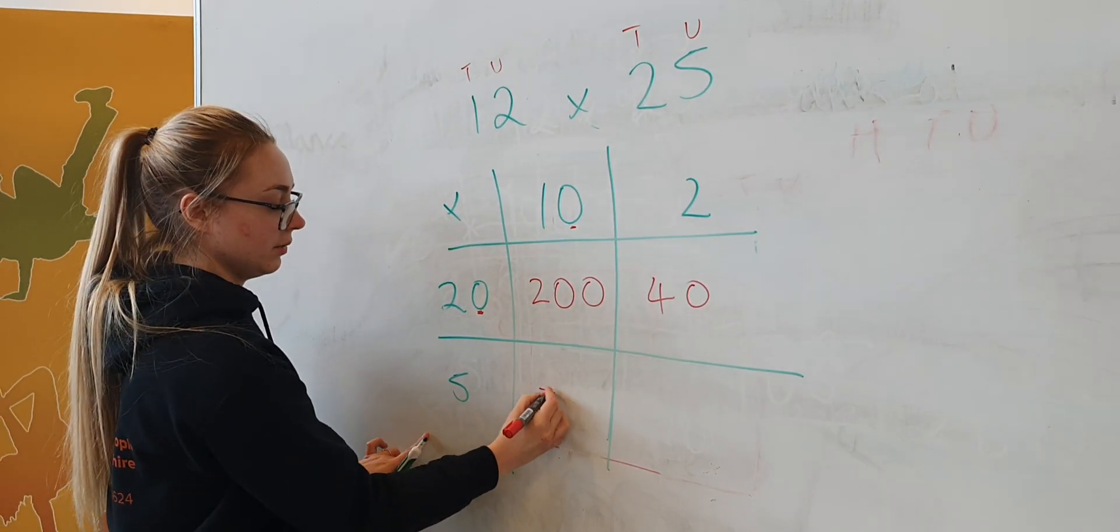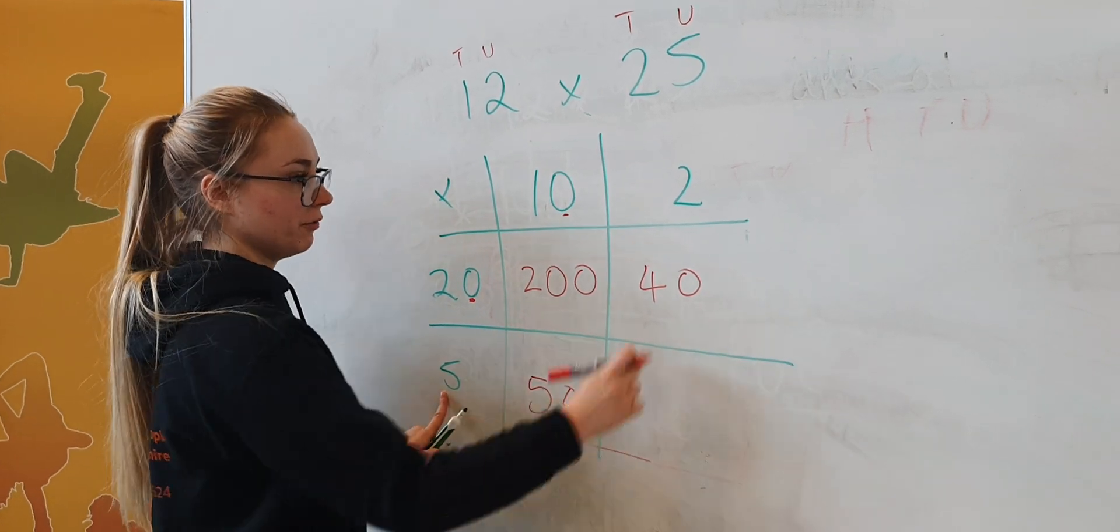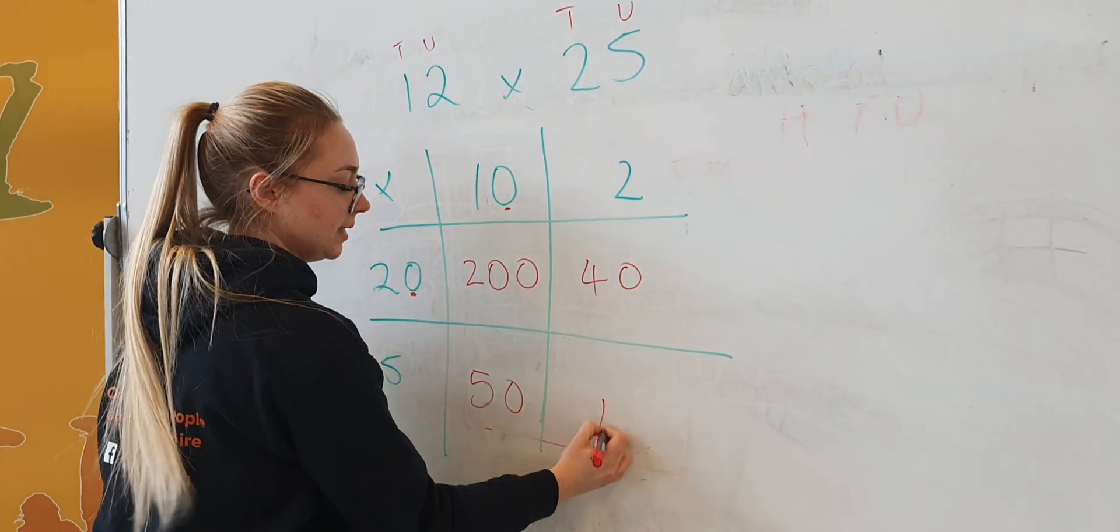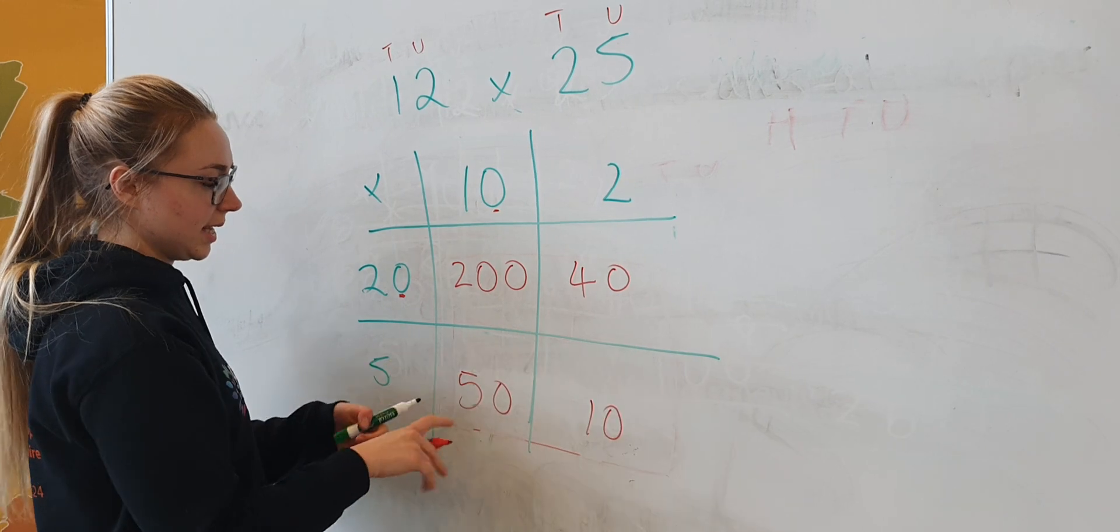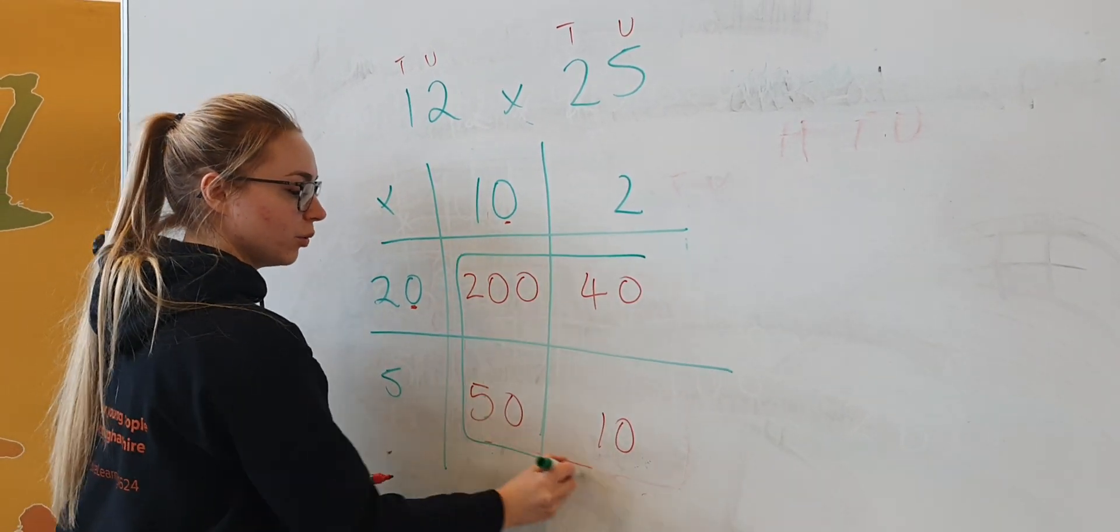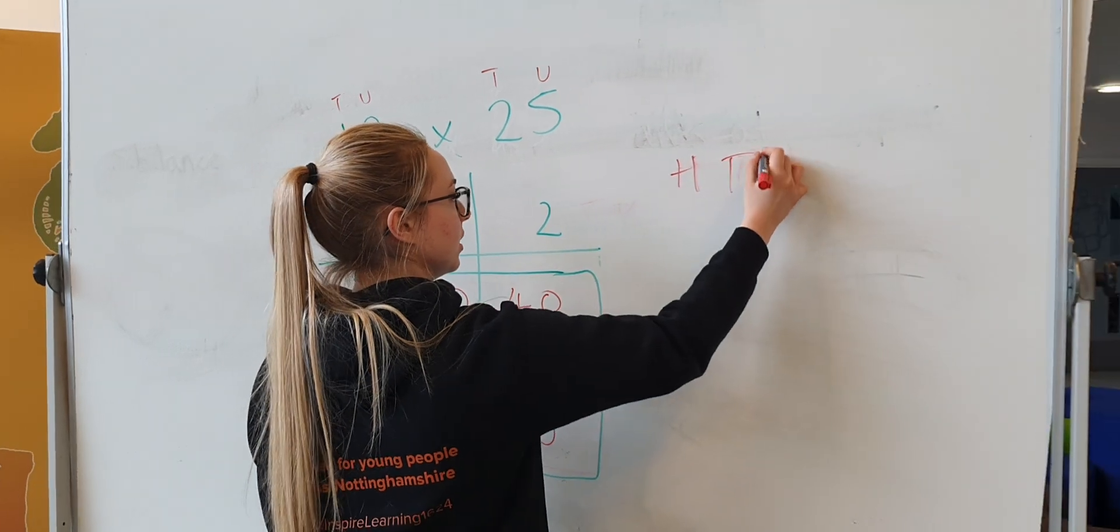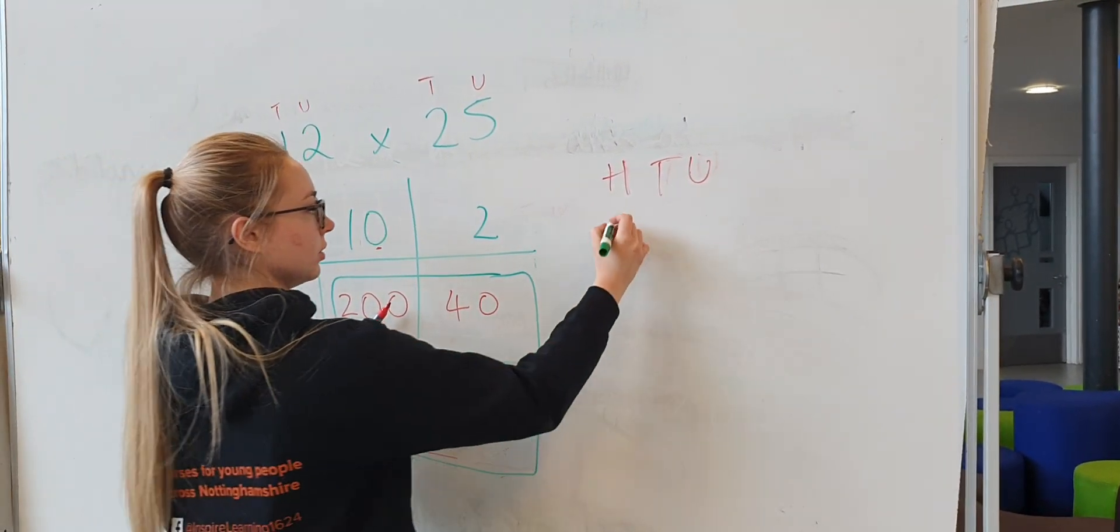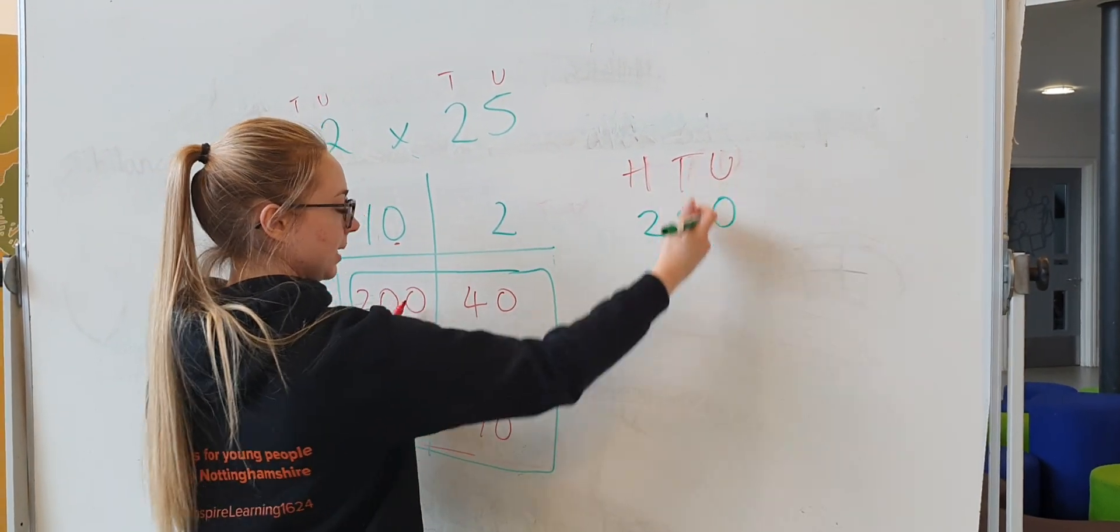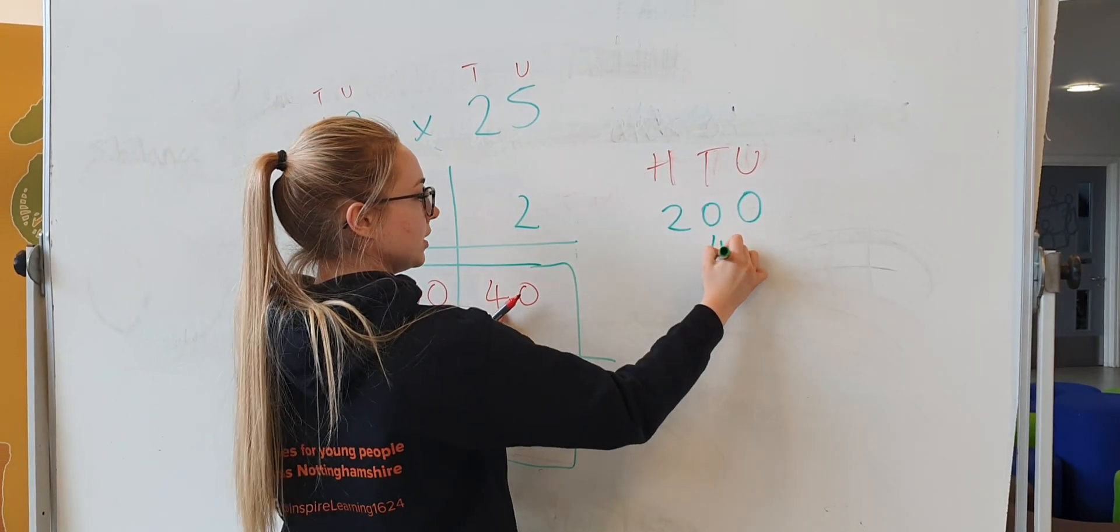Then I'm just going to take all of these numbers and add them up, just like I did last time, in my hundreds, tens, and units. Okay, so I'm going to go 200, keeping it in my nice columns. I've got 40.